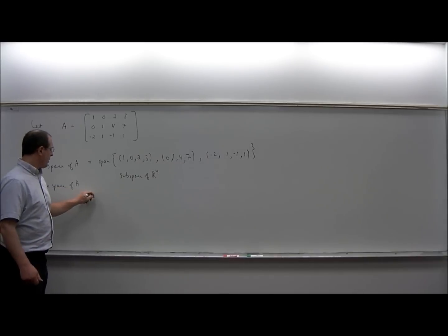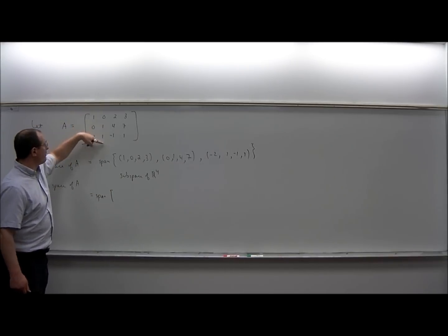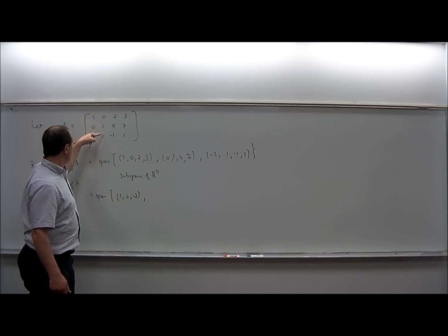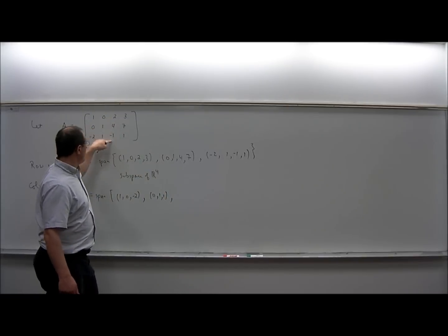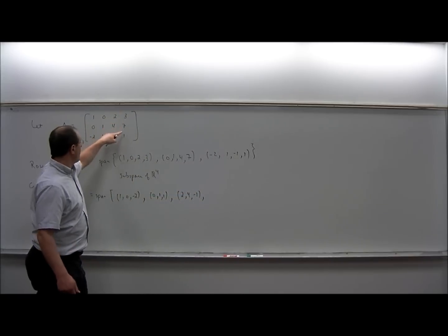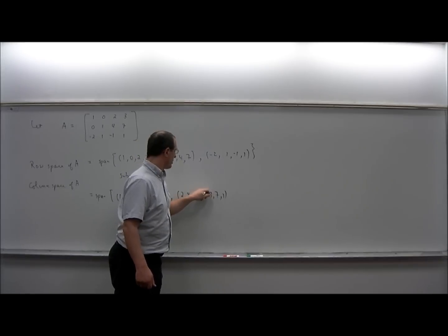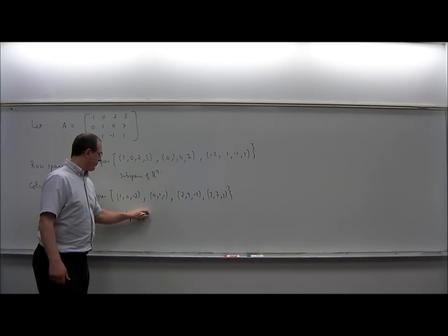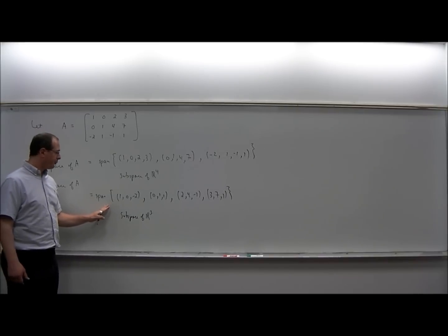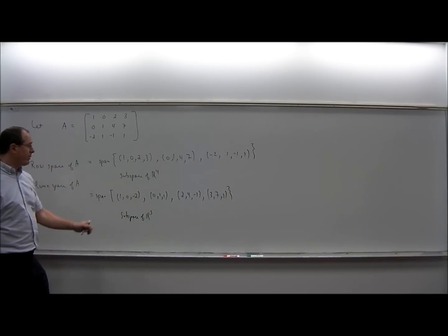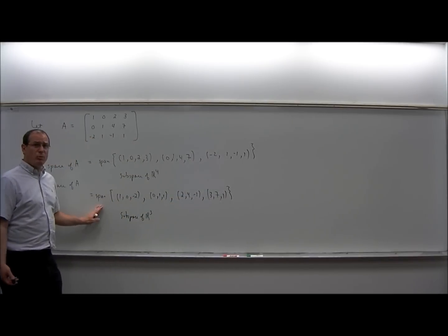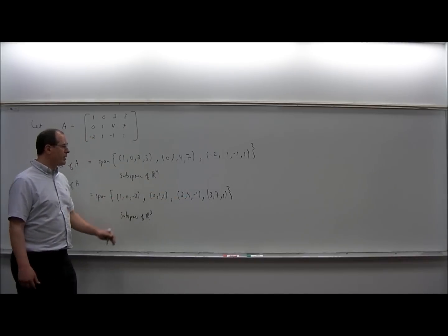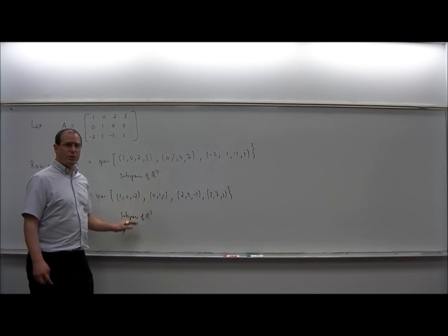Meanwhile, the column space of A is the span of the columns. We think of the columns as vectors in R3. It would be the span of (1, 0, negative 2), (0, 1, 1), (2, 4, negative 1), and (3, 7, 1). So it's the span of these four vectors, and this will be a subspace of R3. Their span can't be more than three-dimensional even though there are four vectors, because R3 itself is only three-dimensional. But it could be two-dimensional or one-dimensional, depending on the linear dependencies between these vectors.